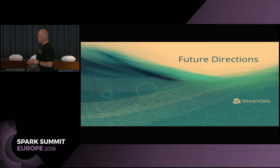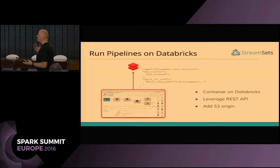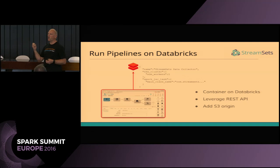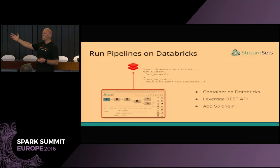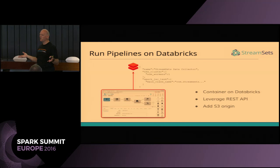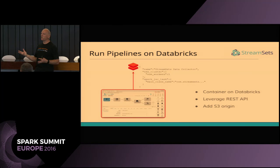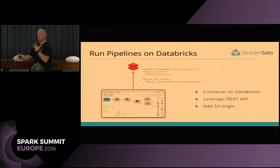Where are we going with Spark? The first piece of work is running pipelines on Databricks. This is essentially porting over the code that bundles up tarballs and submits to Spark — pushing artifacts into DBFS, the Databricks file system, up in the cloud, and then using the REST API to start the job and monitor job state over the wire. In this way, we can get the same functionality but running in the cloud on Databricks. We'll also add an S3 origin, as that seems to be the common case for running on Databricks.